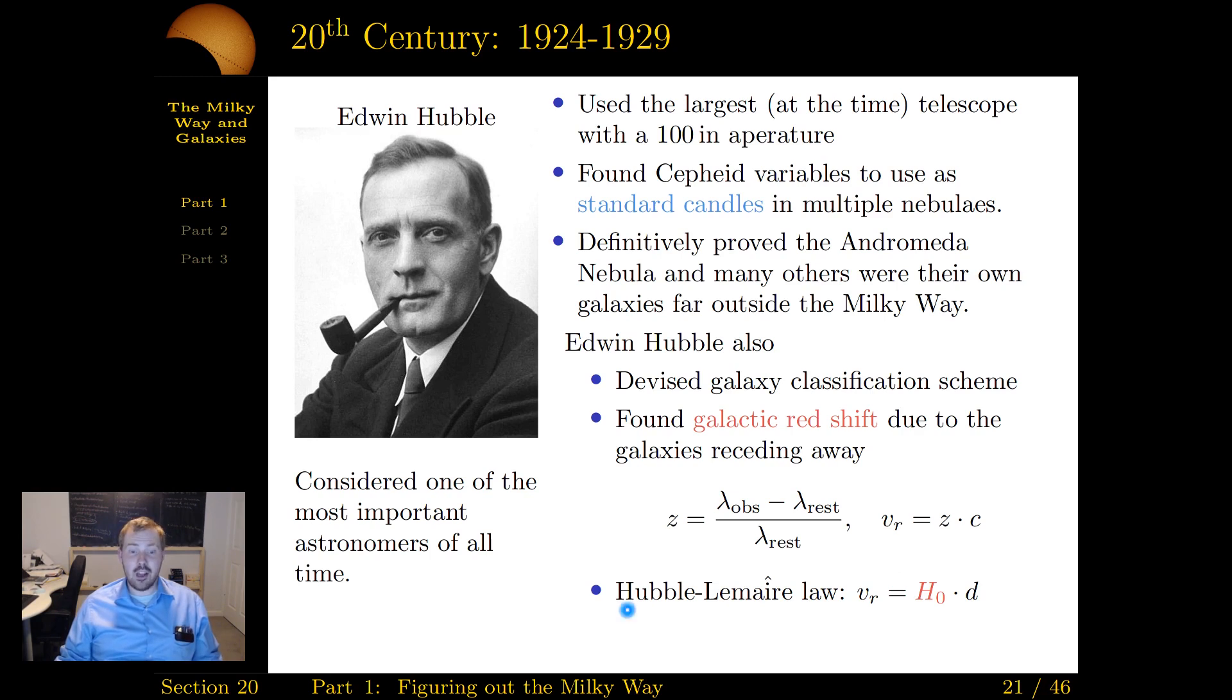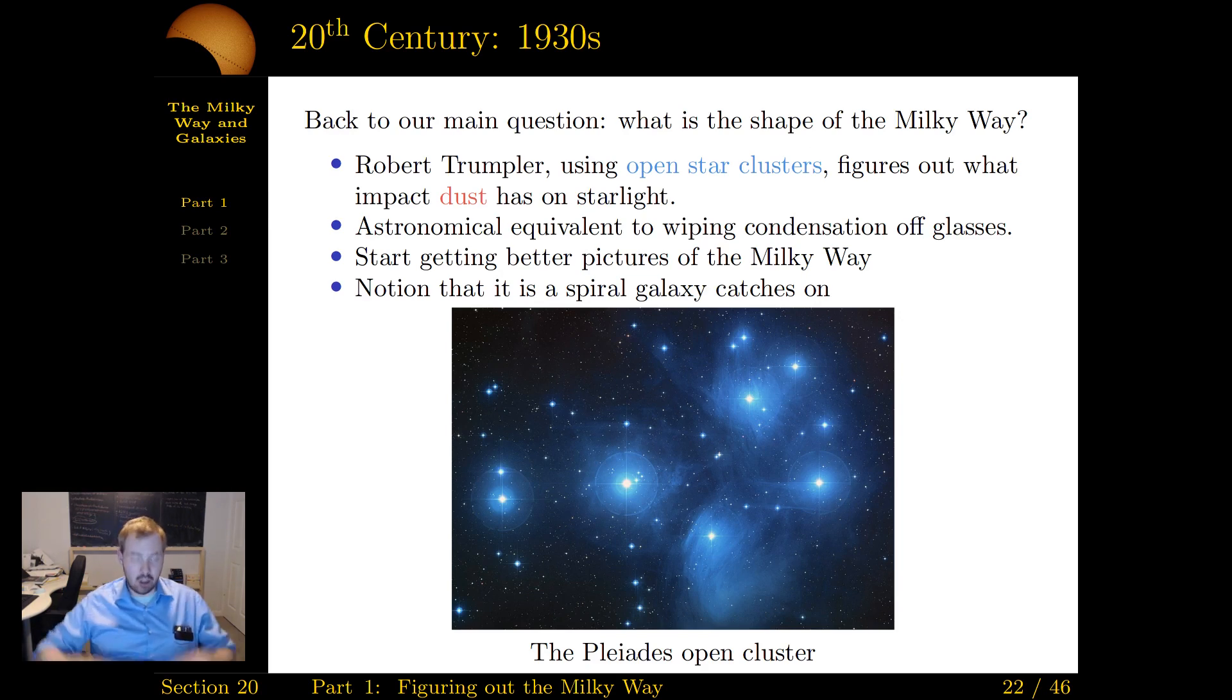Slight modification of that is what's now called the Hubble Lemaitre law, where he said, look, I can get the recessional velocity multiplied by this h-naught, the Hubble's constant, and get the distance. And so Hubble not only said these galaxies exist outside of the Milky Way, he started measuring how fast they are moving. And we'll deal with those consequences later. We want to come back to our main question. The goal of this entire part was, what's the frickin Milky Way look like? What is its shape? Well, we've got a lot of tools now. By studying the nebulae, we've said, look, there are these galaxies outside of the Milky Way. So the Milky Way has to be a galaxy. Let's start figuring out what it looks like.